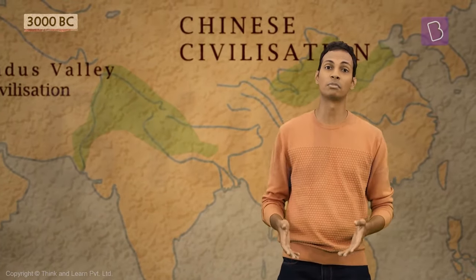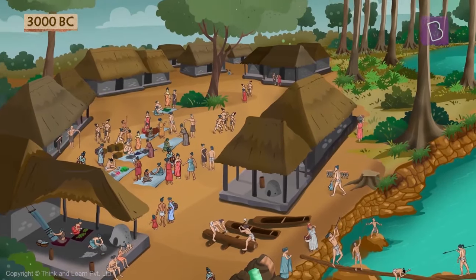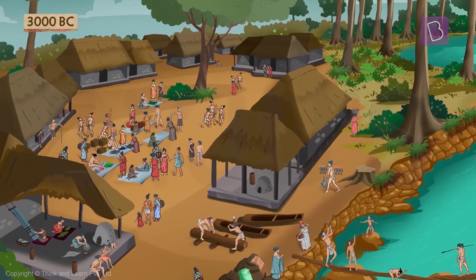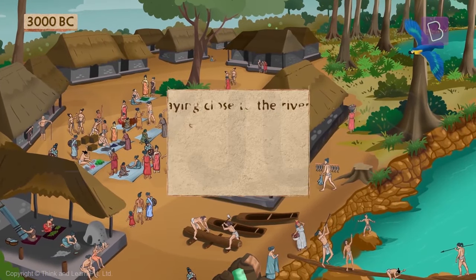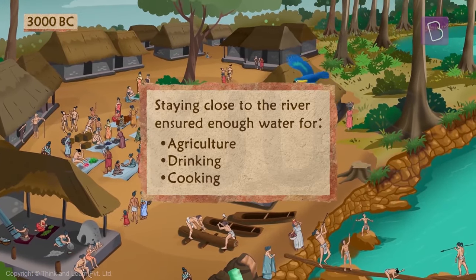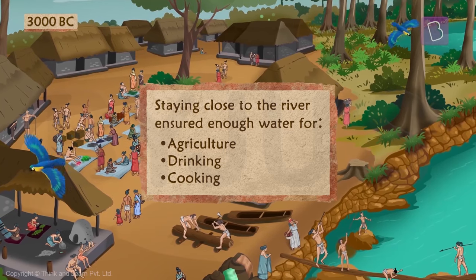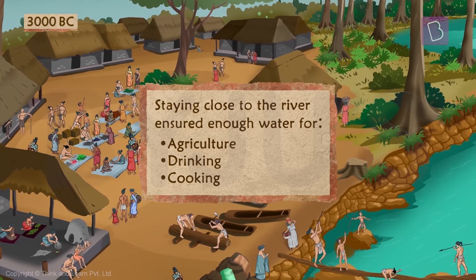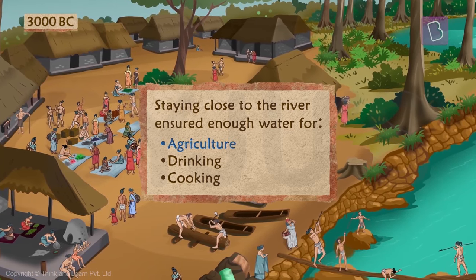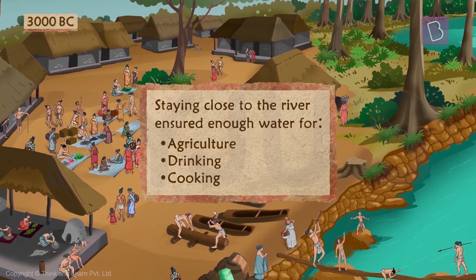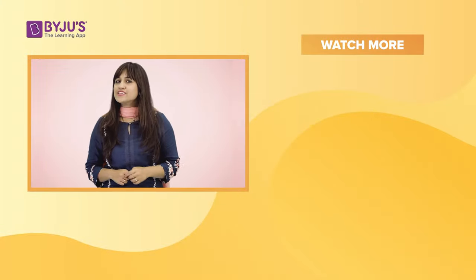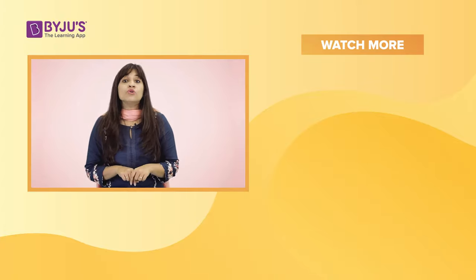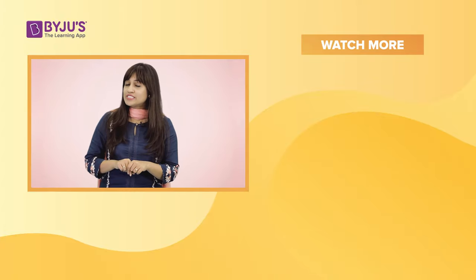So they decided to settle down in places that were close to rivers. Staying close to rivers ensured that they had enough water for agriculture, for drinking, and for cooking.